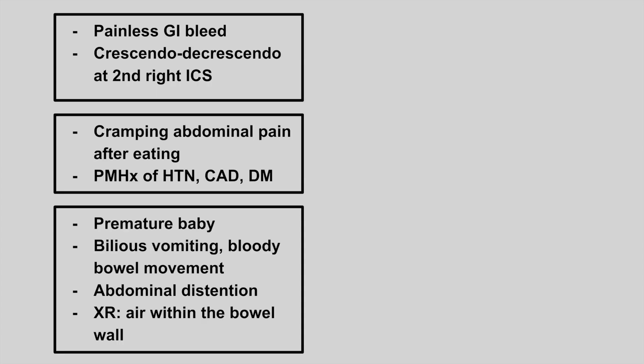The next patient has a painless GI bleed and a crescendo-decrescendo murmur at the right second intercostal space — this is angiodysplasia. This often happens in elders who develop dilated blood vessels, usually more painful on the right side, and is associated with von Willebrand's disease, aortic stenosis, and some renal issues.